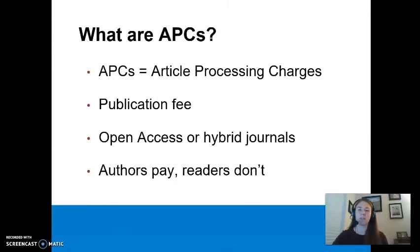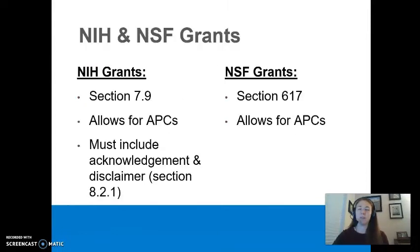So what are APCs? APCs, or article processing charges, are publication fees that open access journals charge an author to publish an article in an open access journal. Including APCs in your grant funding proposals from the beginning will help ensure that you won't have to find funding to cover these costs when you are trying to get published. National Institutes of Health and National Science Foundation grants both allow for grant funding to be used to pay for APCs. Refer to the policy sections listed here for more information.